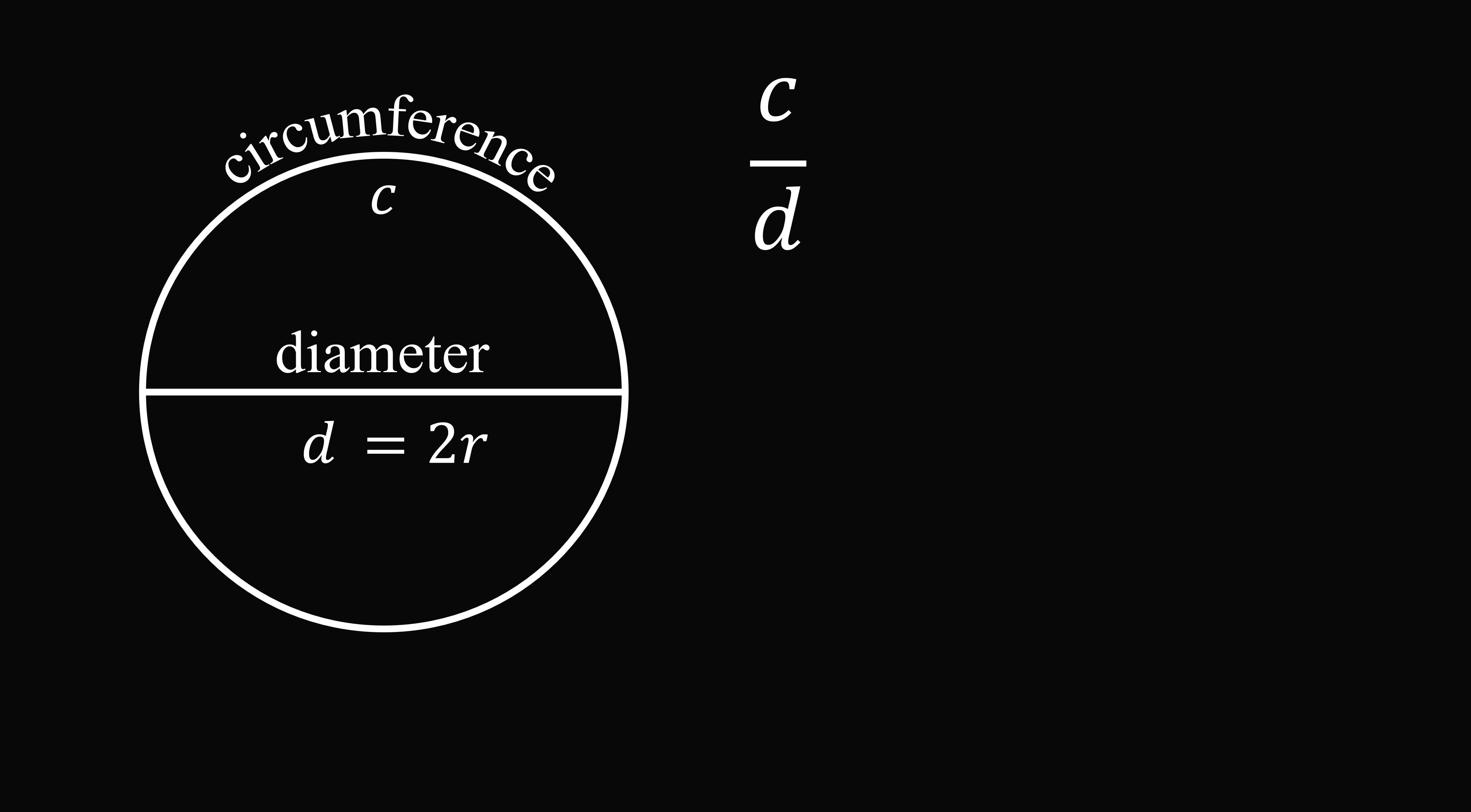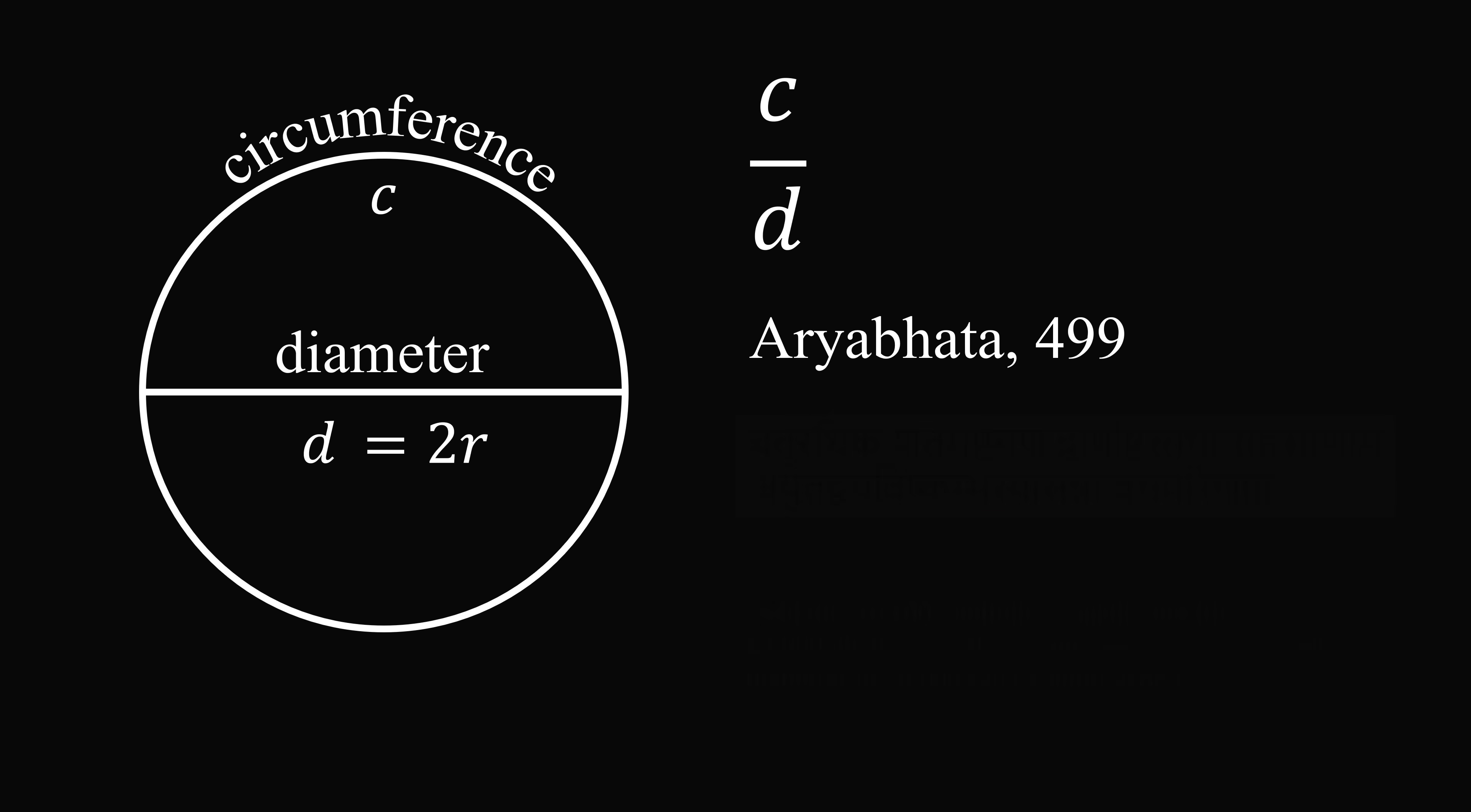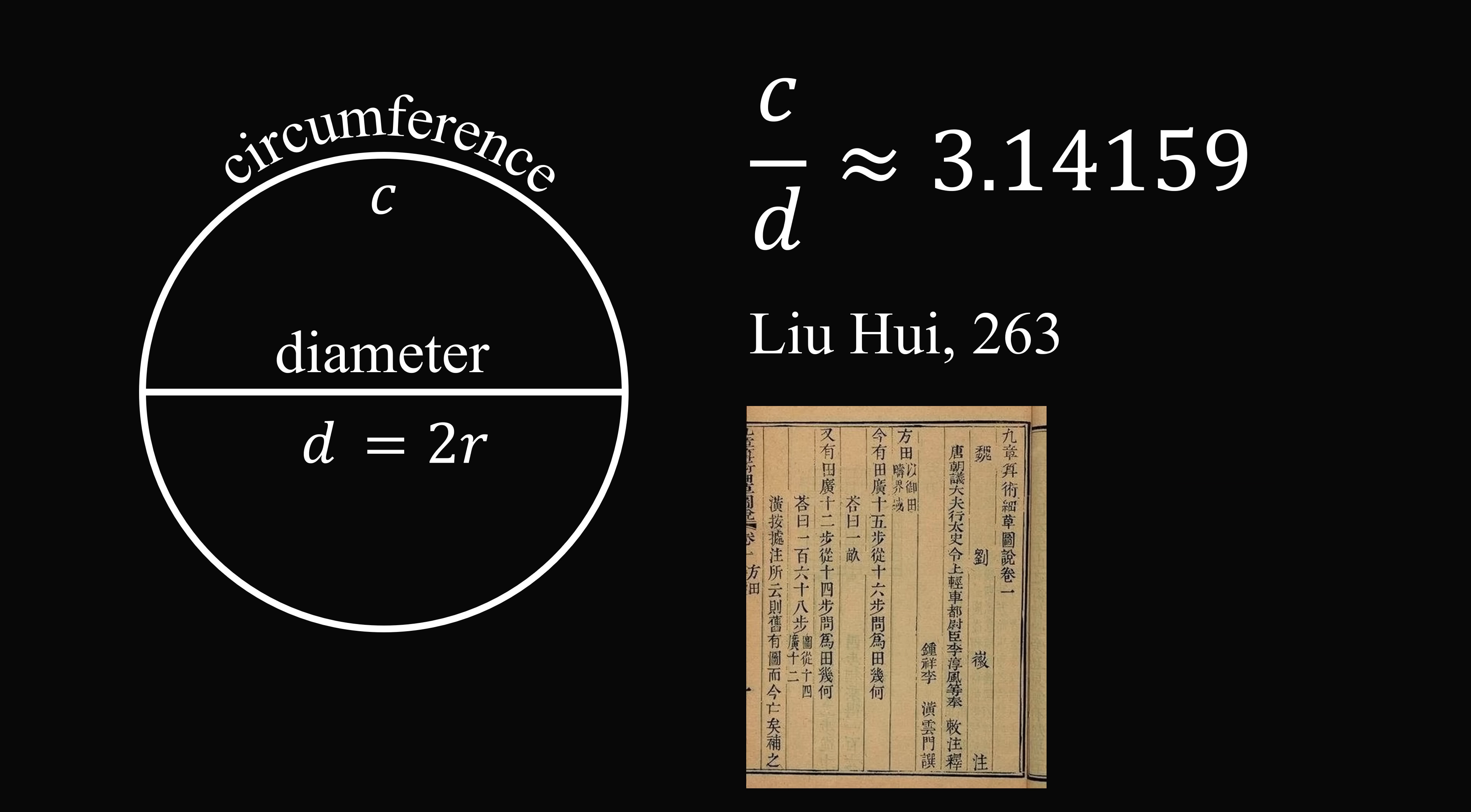Different civilizations came up with different estimates. One of the earliest known estimates was by Archimedes and his value was approximately 3.14. Aryabhata came up with the approximation of 3.1416. Li Hui came up with the approximation of 3.14159.